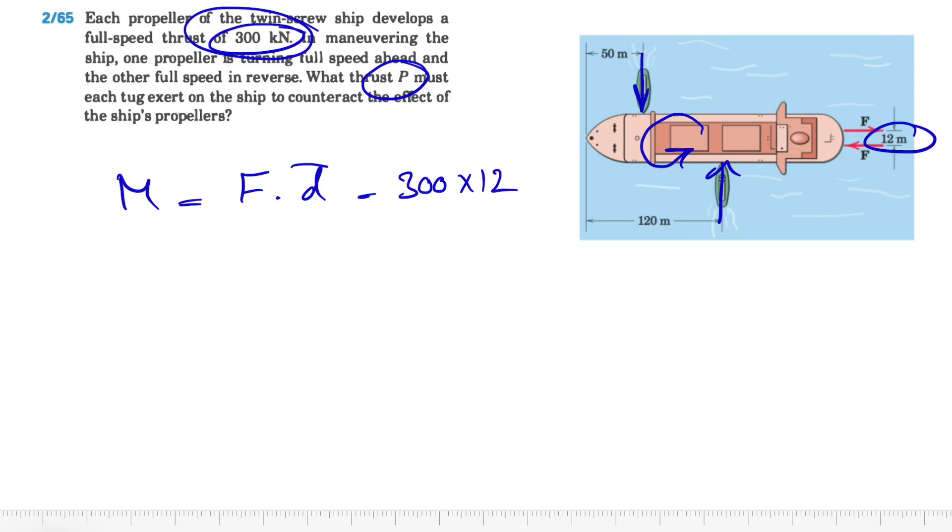So the force that we call from the tugs P has to be same as this couple produced by the F. So we have the same thing in here. What we care about is again the force is P and the d that we have in here, again the distance between these two forces. So we have to figure out that distance, which is basically we know from here to here is 120 and we have 50 in here. Basically 120 minus 50 is going to give us that distance.